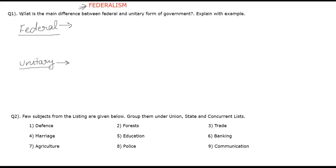The first question is: what is the main difference between federal and unitary form of government? Explain with examples. We will discuss the two different types of government forms and the difference between them.